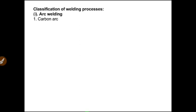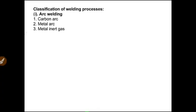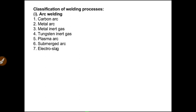The classification of the welding process, covered one by one as per the CBT syllabus, begins with arc welding. Types of arc welding include: carbon arc welding, metal arc welding, metal inert gas (MIG), tungsten inert gas (TIG), plasma arc welding, submerged arc welding, and electroslag welding.